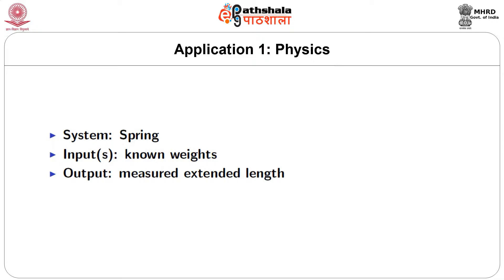The first application comes from the field of physics. In this example, the system we will be working with is a spring. A spring elongates in length when you hang different weights from it, so we can think of the various weights as the inputs — a single input, the weight hung from the end of the spring. Since we are placing the weights, we know their exact values. The output is the measured extended length. We do not know the quantitative behavior of the spring, such as its original length or its spring constant.